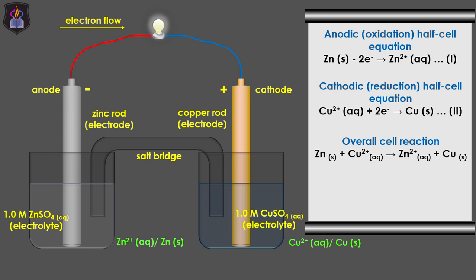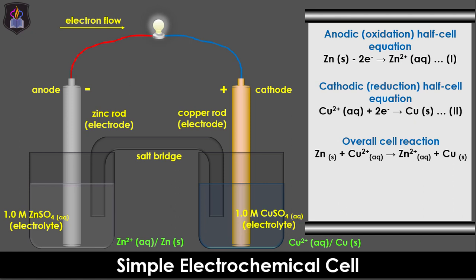This setup, which involves the combination of two half cells and a porous partition or a salt bridge, is called an electrochemical cell. We will learn more about electrochemical cells in our subsequent tutorials.